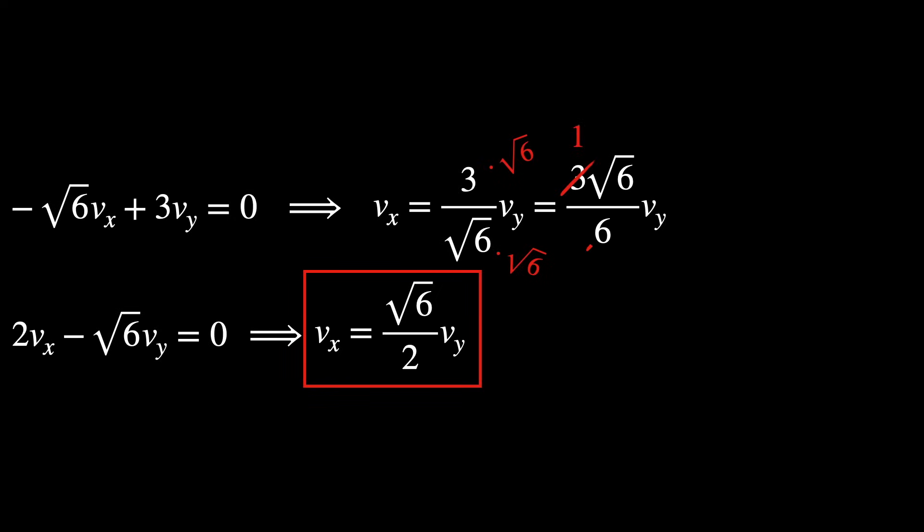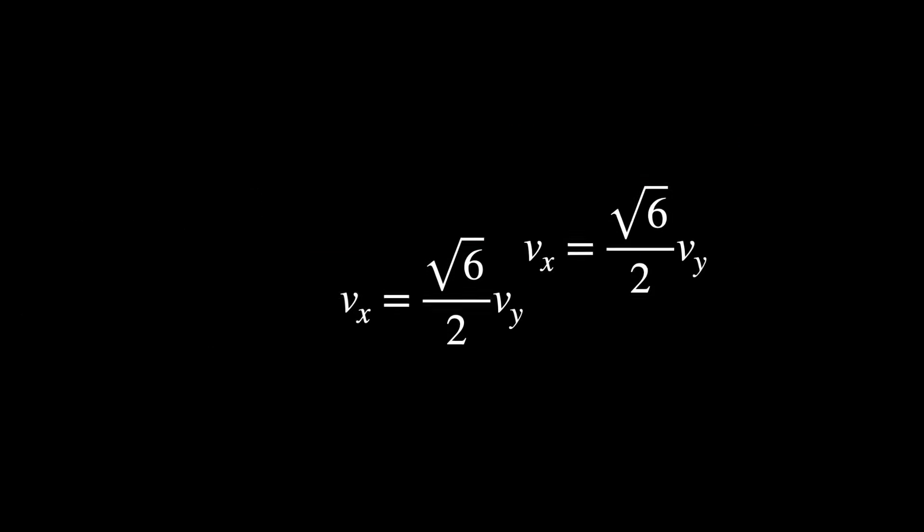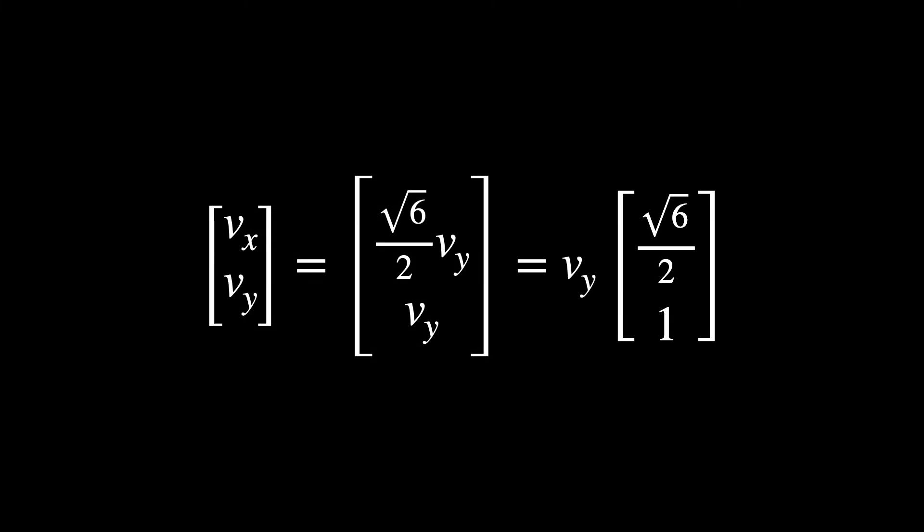We found the same expression of the x component in terms of its y component in both equations. Now we can build the general vector Vx, Vy. Factorizing Vy outside of the vector, we get Vy times the square root of six over two and one.